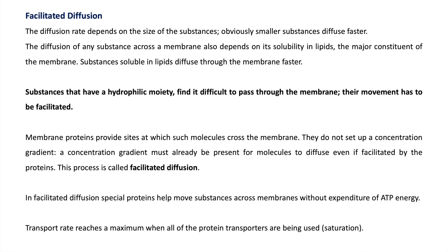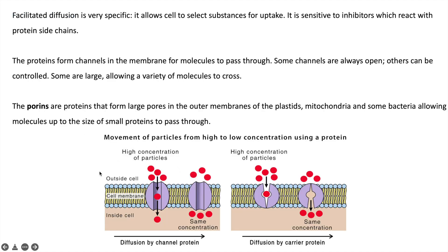Whenever the transport protein gets saturated with a substance, the transport mechanism stops. Also, if the concentration gradient on both sides becomes equal, transportation stops. Facilitated diffusion is very specific — it only allows specific substances to move from outside to inside the cell. If an inhibitor is given that inhibits the transport protein, the movement of particles will also stop. In this figure, some proteins remain open and movement of substances takes place from higher concentration to lower concentration.